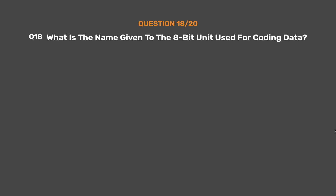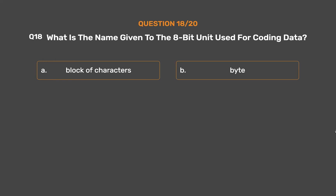Question number 18. What is the name given to the 8-bit unit used for coding data? Option A: Block of characters. Option B: Byte. Option C: Word. Option D: KB.